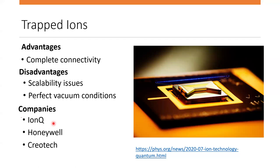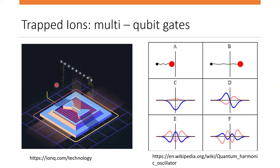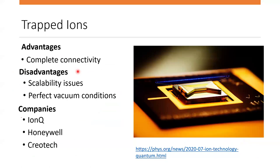One way to overcome the scalability issue is to have multiple chains and move them around to perform gates on qubits from different chains. However, moving even 10 atoms at once with a rotating electric field potential is a real engineering challenge. Other challenges include operating at temperatures close to absolute zero, and maintaining near-perfect vacuum conditions — meaning essentially no other atoms are present in the environment. The presence of other molecules can knock ions from their positions, leading to errors.